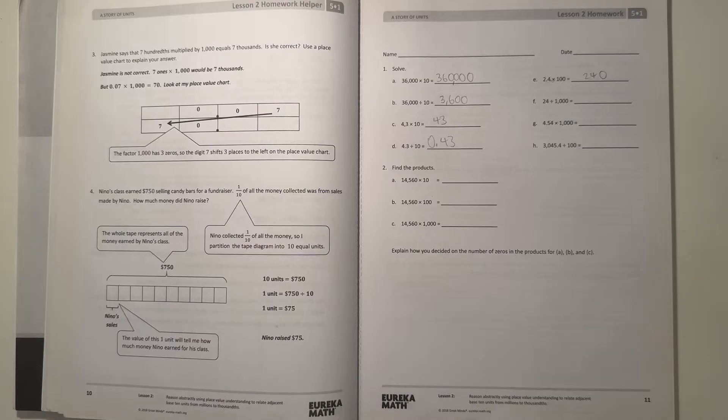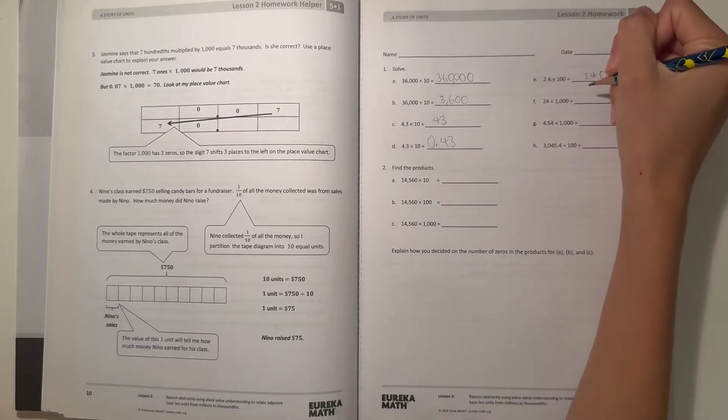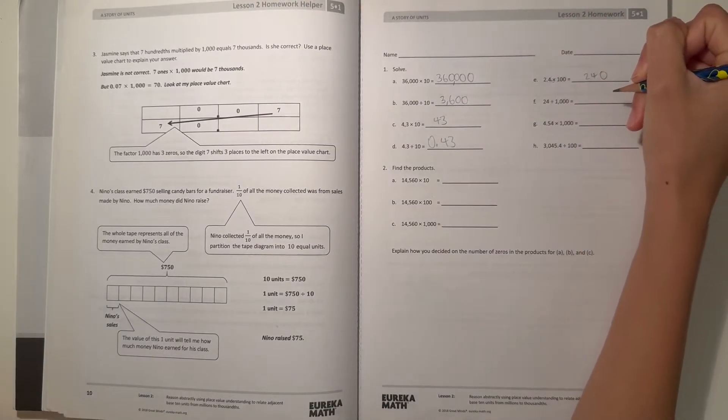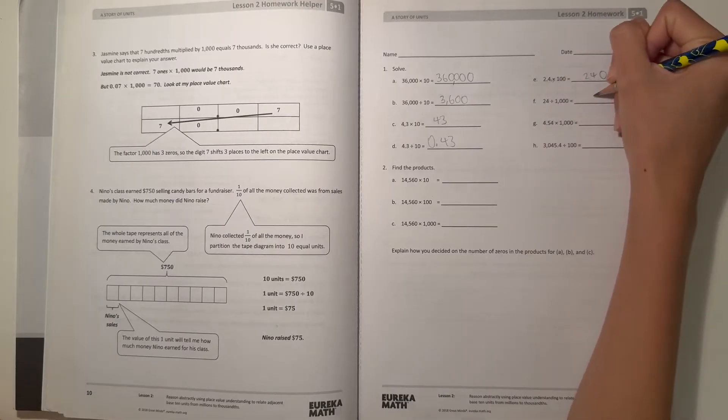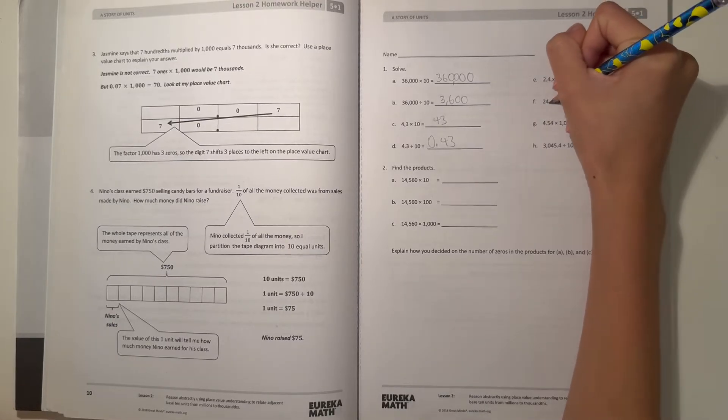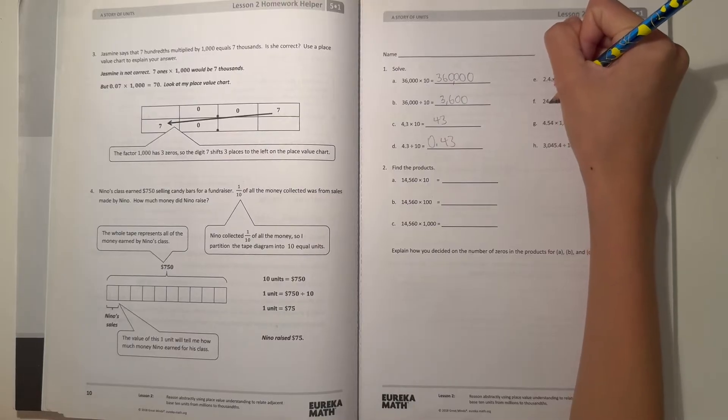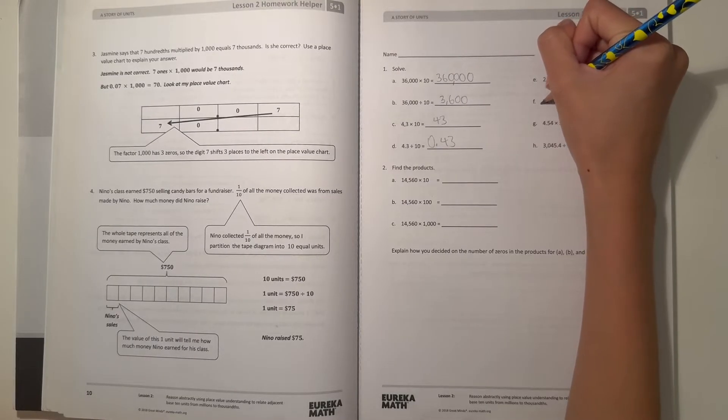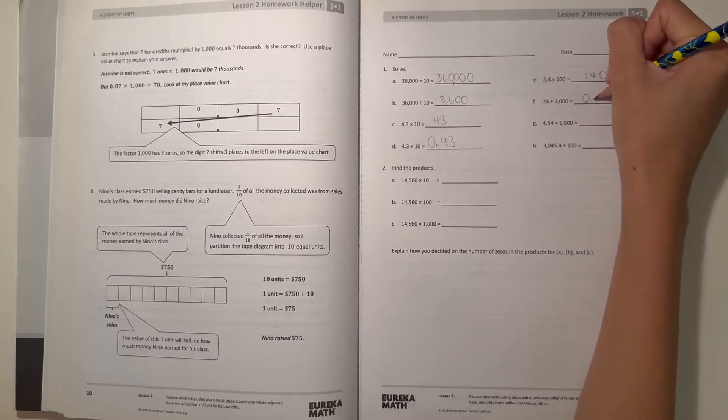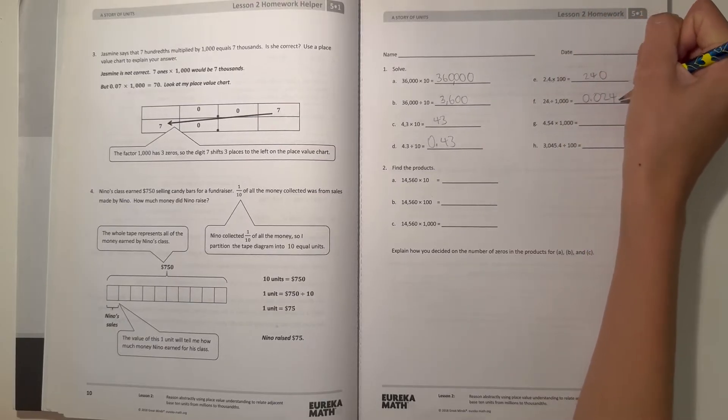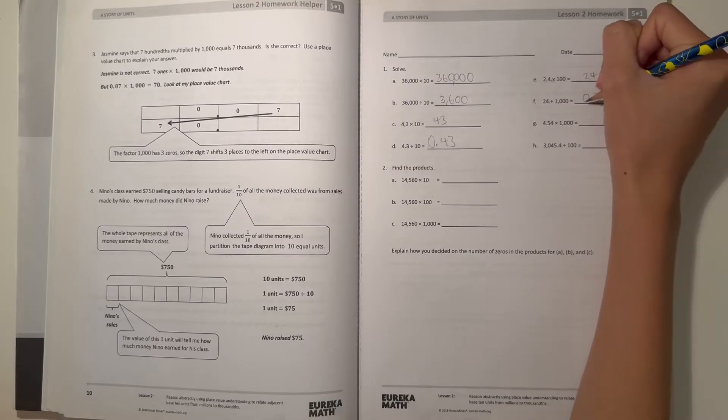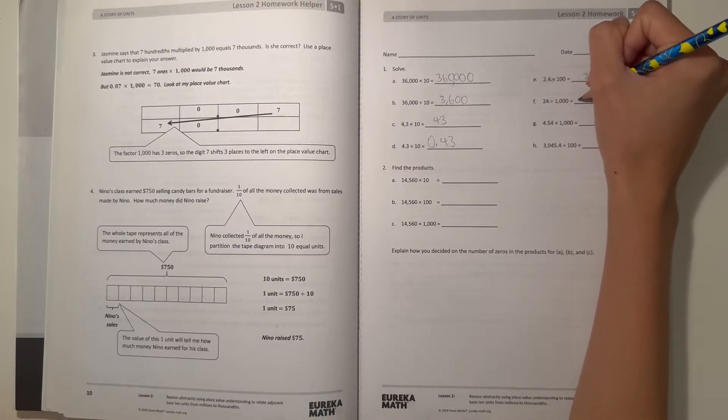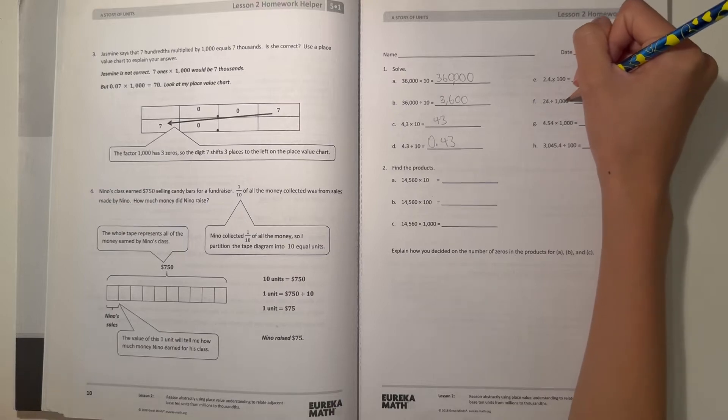Alright, and then F, we have 24 divided by 1,000. So if we're dividing it by 1,000, let's first we have 24 here, and the decimal point would be here. So divided by 1,000, we move it three places to the left. That would be 1, 2, and 3. So that would be 0.024.